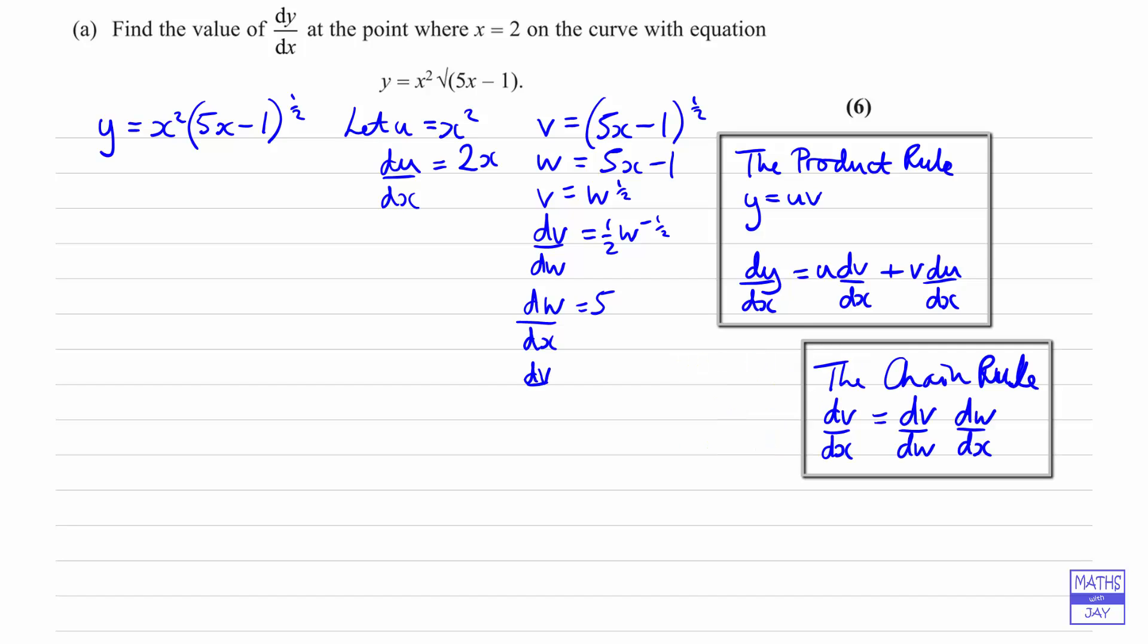So now we can write down that dv by dx is dv by dw. So that's a half w to the negative a half. And now instead of w here, I'm just going to put in 5x minus 1, because that is w, so that's to the minus a half. And then we're going to multiply that by the dw by dx, which is 5. So let's just put that in a bracket there. So really the hardest bit so far is realizing that one of the functions was a function of a function and that we needed to apply the chain rule.